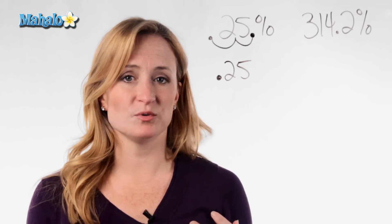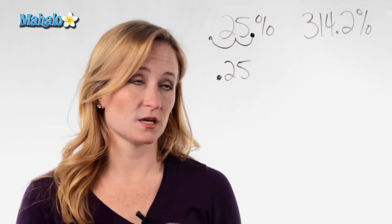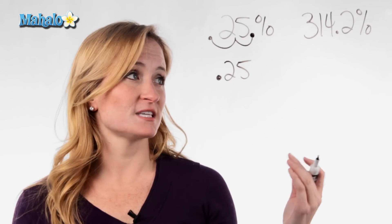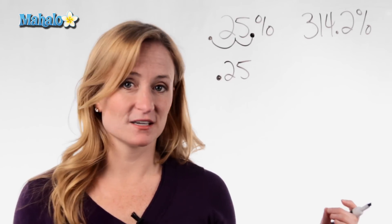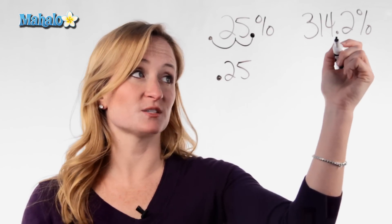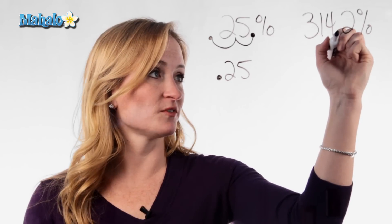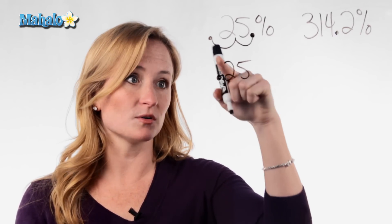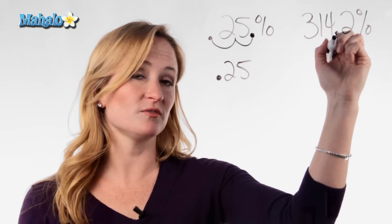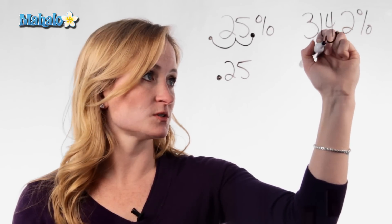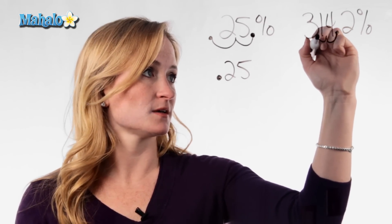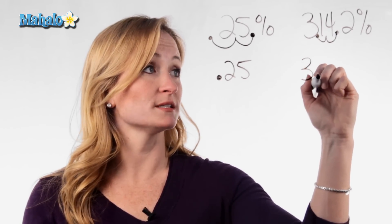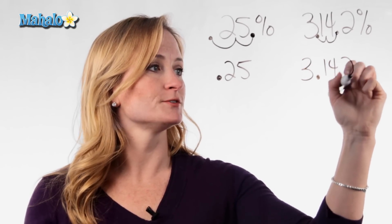You're always going to move the decimal over twice. So for example, if we have a number like 314.2 percent, you're going to move the decimal that's already there. You're only moving it twice — two spots. So this now becomes 3.142.